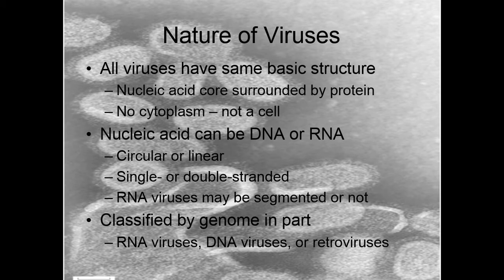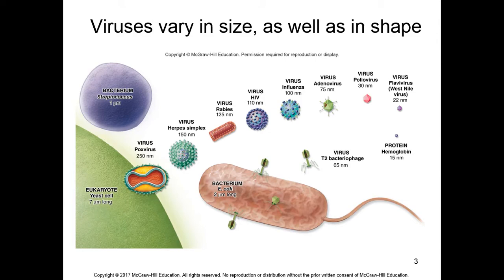The nucleic acid that viruses have can be present within the protein core or capsid either in the form of RNA or DNA. The RNA can be double-stranded or single-stranded, and similarly for DNA. This important property of the nucleic acids found inside viruses is used for the classification of viruses — that is why we have RNA viruses, DNA viruses, or retroviruses.